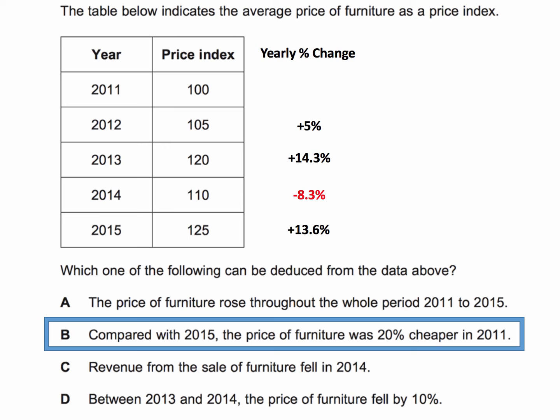Now, because the price of furniture fell in 2014, option A is wrong. Option A states the price of furniture rose throughout the whole period — no, it fell in 2014. So we can eliminate A. I think the answer is B, but let's just think about the other options.